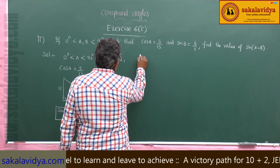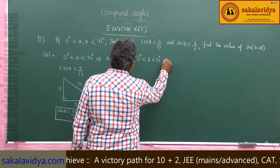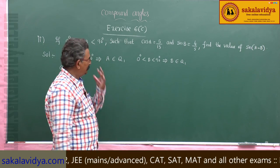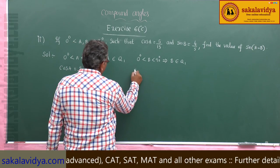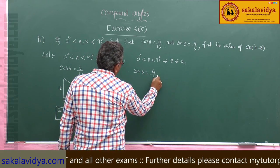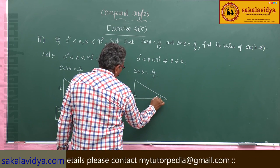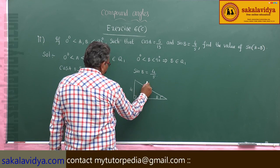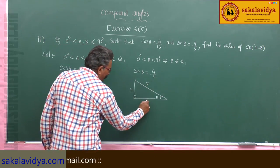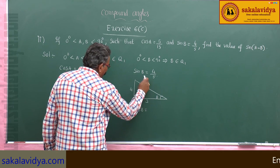Since 0 degrees less than b less than 90 degrees, b also belongs to the first quadrant. Given sin b equals 4 by 5, taking a right angle triangle: 25 minus 16 is 9, square root of 9 is 3. So cos b equals 3 by 5.